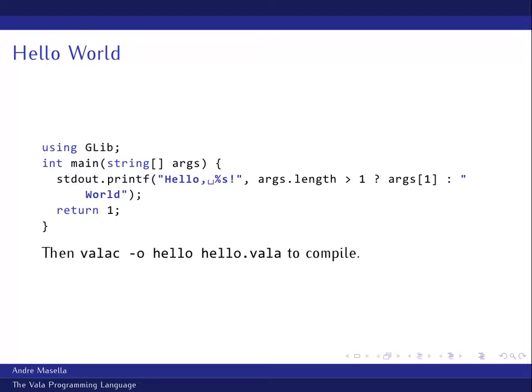Vala will actually do type checking to make sure that a '%s' is indeed a string. GCC will give you a warning if you don't match those up; Vala will give you an error. Also, one extremely handy feature: in C if you use '%c' to display a character with printf, you always have to cast the char to an int, otherwise on some platforms the stack becomes unaligned and you get a bus error. Vala casts it for you automatically.